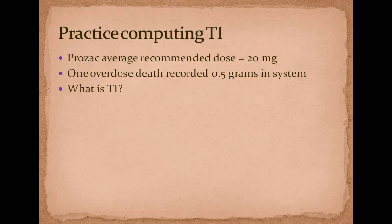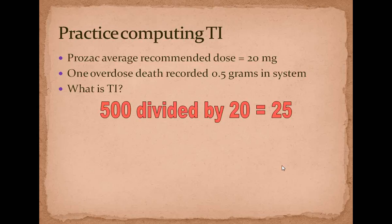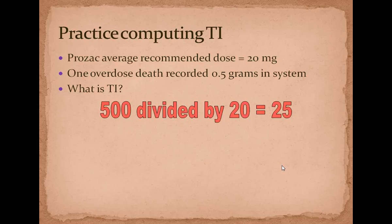Prozac: the average recommended dose is 20 milligrams; one overdose death was recorded at 0.5 grams in the system. 500 divided by 20 equals a therapeutic index of 25. As one uses heroin, the dosage needed goes up while the lethal dose does not change very much — this is why heroin is very dangerous.